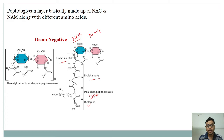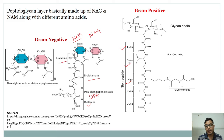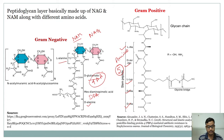In gram-positive bacteria, the amino acids present are alanine, lysine, alanine, and alanine — five components total. In gram-negative bacteria only four amino acids are present. This is the major difference between the gram-positive and gram-negative cell wall composition.